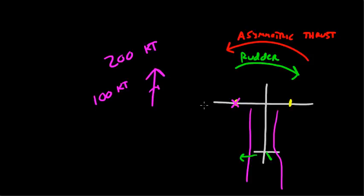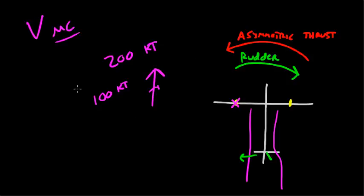There is a certain amount of rudder power that you need in order to overcome the asymmetric thrust of the engine. If you don't have enough airflow going over the rudder, you will not be able to oppose the asymmetric thrust of the engine, even if you push the rudder all the way to the floor. That particular speed — the speed at which you must be flying in order to have your rudder be powerful enough to oppose asymmetric thrust — is VMC. Minimum control airspeed.